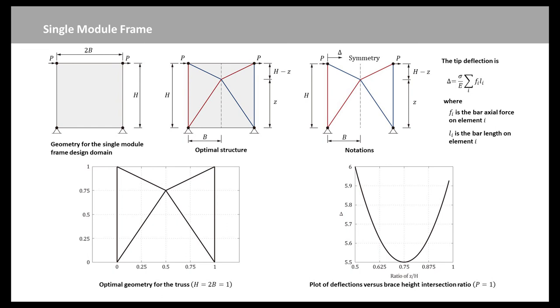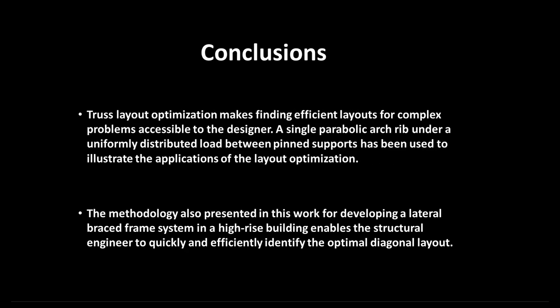From conclusions, what we learned, truss layout optimization makes finding efficient layouts for complex problems accessible to the designer. A single parabolic arch rib with a uniformly distributed load between pin supports has been used to illustrate the applications of the layout optimization. The methodology also presented in this work for developing a lateral brace frame system in a high-rise building enables the structural engineer to quickly and efficiently identify the optimal diagonal layout.